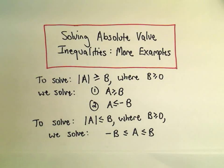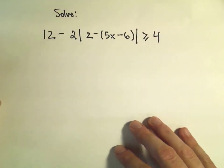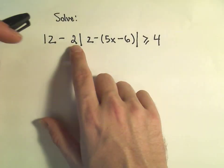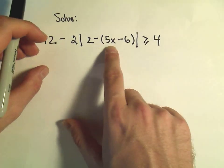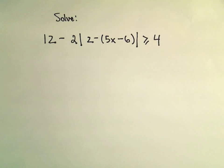All right, as promised, here's going to be one more example about solving some absolute value inequalities. So in this case, we've got 12 minus 2 times the absolute value of 2 minus, and then in parentheses, 5x minus 6, all of that greater than or equal to 4.